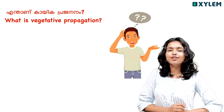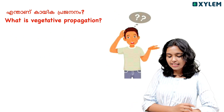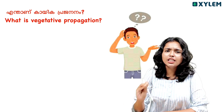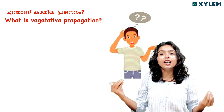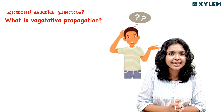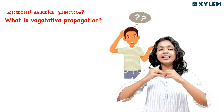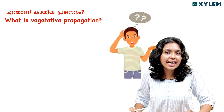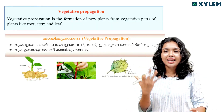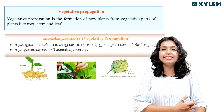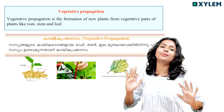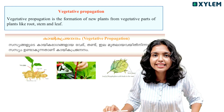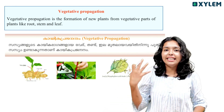Let's go to the next question: What is vegetative propagation? That is the formation of a new plant from the root, leaf, or stem. Okay, let's start with the next topic.